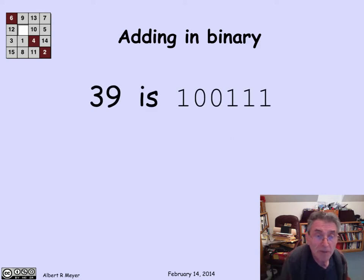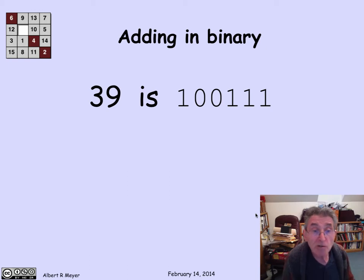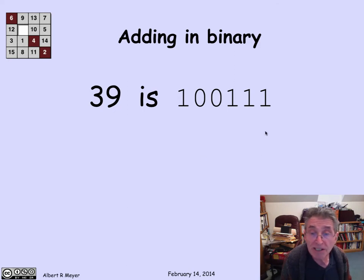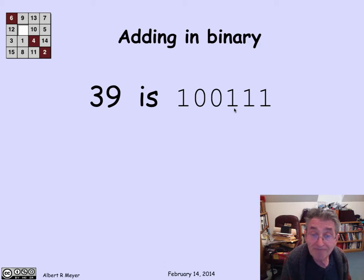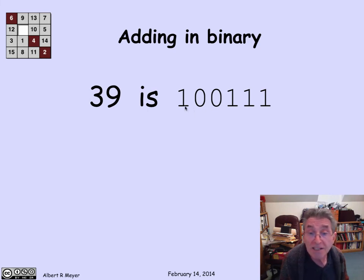Binary works like decimal, except instead of using powers of 10, you're using powers of 2. Here is the binary representation of the number 39. This is the ones place, that's the twos place, that's the fours place. So 1 plus 2 plus 4 is 7. Then this is the eighth place with nothing, this is the 16th place with something, and this is the 32 place with 1. So we add 32 to 7 and get 39.